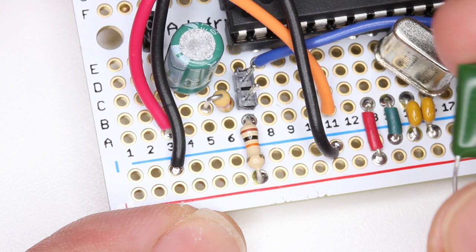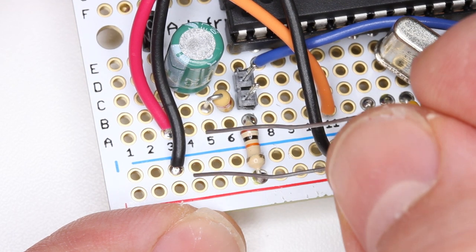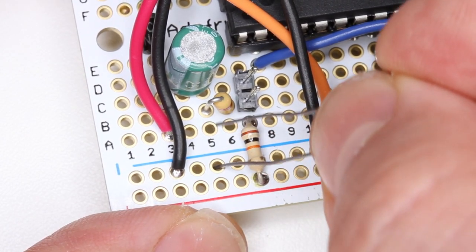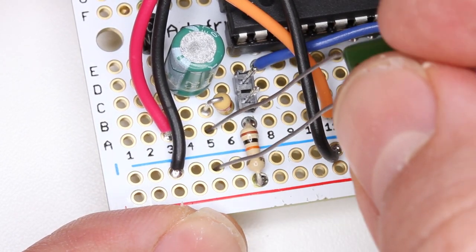This part will be installed between this hole and the ground rail of the board. This type of capacitor is not polarized, so you can install it in either direction.